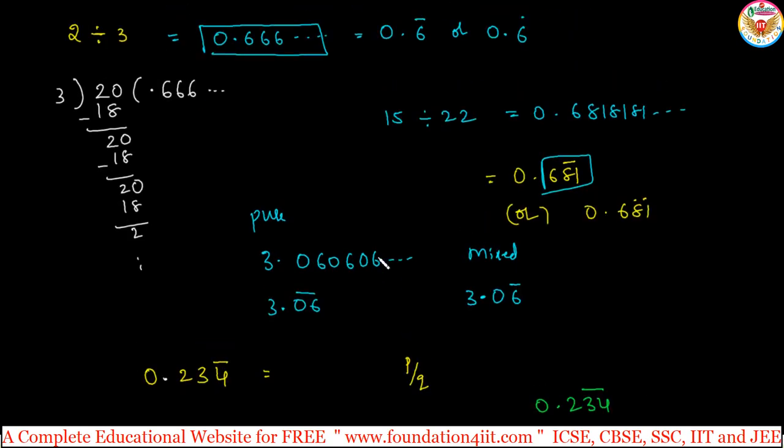Previous example also you observed, 2 divided by 3 is 0.6 with bar. Now how to write this one: 6 as it is divided by how many digits are repeating, only one digit, so 9. 6 by 9, you can cancel 2 table: 2, 3. And 3 table you can cancel: 3, 2 is 0, 3, 3 is 0. So 2 by 3. Same, we got 2 divided by 3.